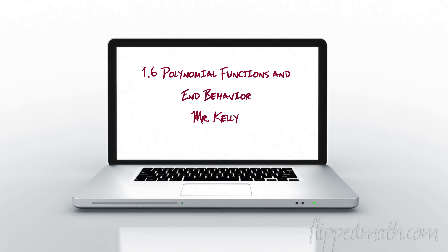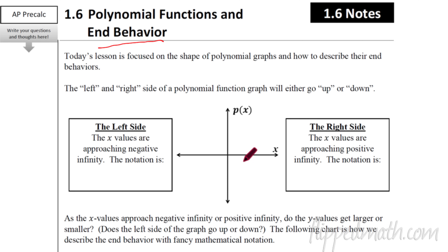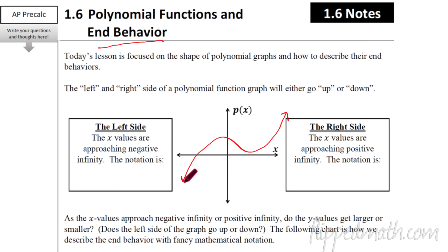Pre-Calc students, welcome back. We're on section 1.6, polynomial functions and end behavior. This isn't too tricky. Basically, end behavior is we're going to look at a function and you tell me what happens all the way to the right and all the way to the left with that function. You'll notice that polynomial functions never go constant — they're not just going to lay flat. They're either going to go up or they're going to go down. Let's use this example here of a polynomial function.